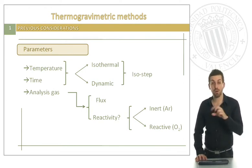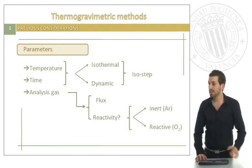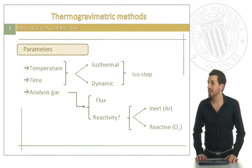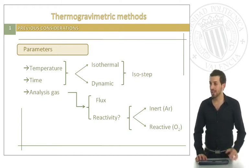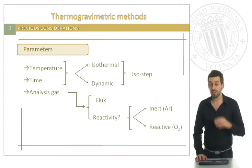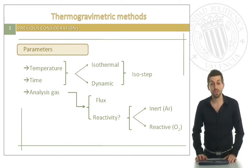A combination of both isothermal and dynamic will result in the method which is known as isostep. Regarding the gas that we use for our analysis, we have to define, first of all, which is the flux — that means the amount of gas per time unit that you are applying.